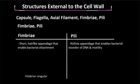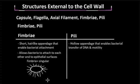Lastly, we have fimbriae and pili. Fimbriae is a short hair-like appendage that enables bacterial attachment, meaning it allows bacteria to attach to each other as well as to epithelial surfaces. In this image, the individual lines represent the fimbriae. When discussing the plural, we use the term fimbriae.